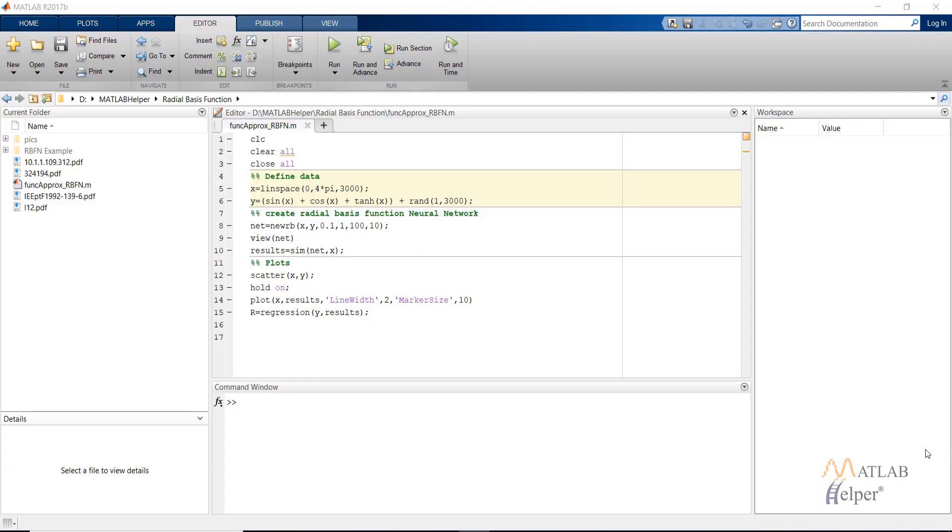Hello everyone, in this video tutorial we will look into another type of neural network named a radial basis function neural network. So first we will look at a brief introduction about what is a radial basis function neural network and then we will look at its application in MATLAB.